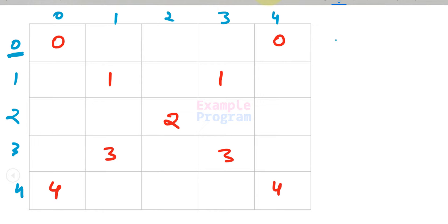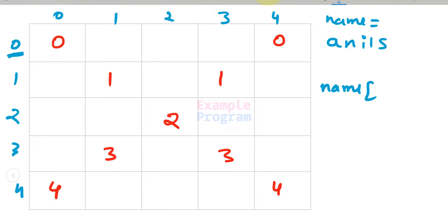Now with string values — for example if I have 'anils' — we can use the indexing operator, specify an index, and get a particular character from the string. With string values indexing starts from 0. So if 'anils' is stored in a variable called 'name', then name[0] gives 'a', and name[2] gives 'i' (0, 1, 2).